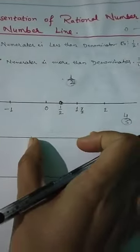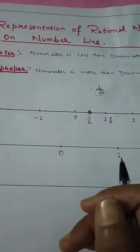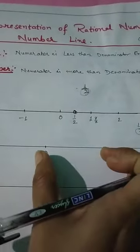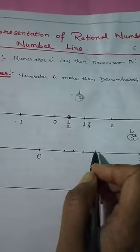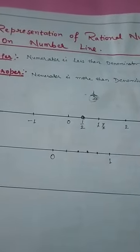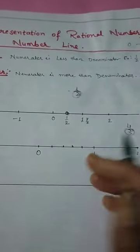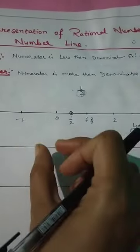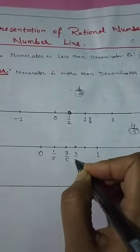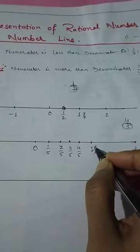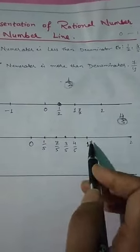Take a slightly larger distance for 0 to 1 since we need 5 equal parts. There is no need to mark beyond 1 because for a proper rational number the value always lies between 0 and 1. Divide 0 to 1 into 5 equal parts — measure carefully with a scale. The first part is 1/5, then 2/5, 3/5, 4/5, and the last is 5/5 which equals 1. We need to plot 4/5, so that fourth point is our answer.